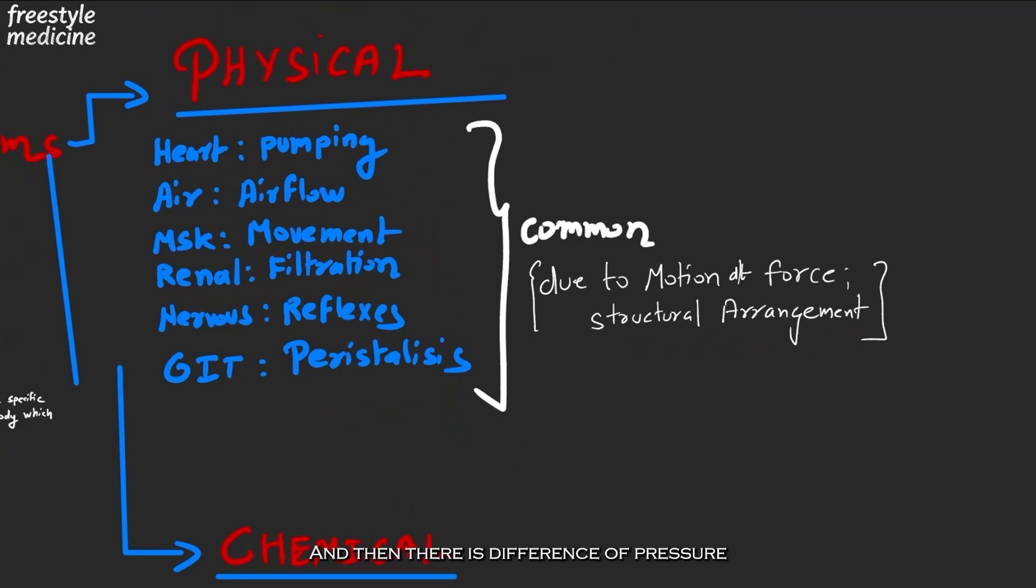For example, we have the glomerulus with the afferent arteriole, and there is a difference of pressure between the hydrostatic and the oncotic pressure. This difference of pressure and generation of a net pressure is actually leading to formation of the GFR.